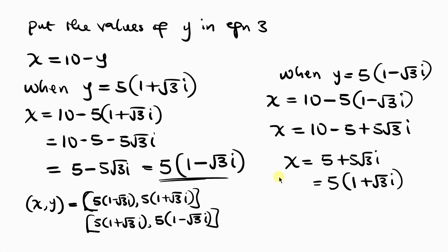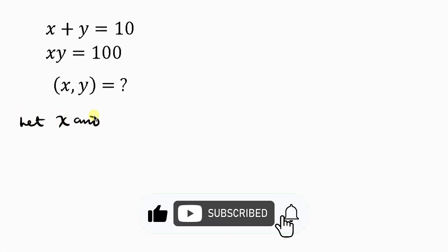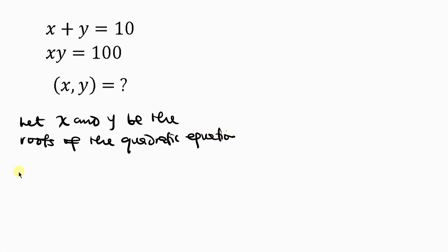Now I'm going to solve this using another method — the simplest method. For method 2, we let x and y be the roots of the quadratic equation t squared minus S1·t plus S2 equals 0, where S1 is the sum of roots and S2 is the product of roots.